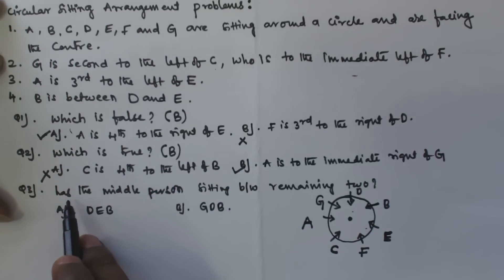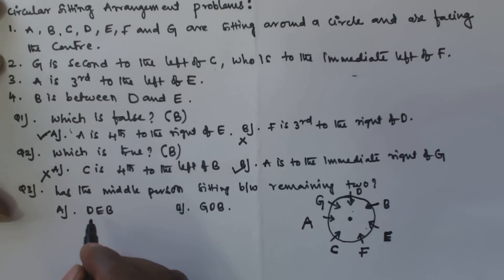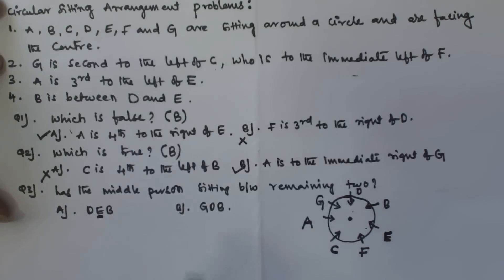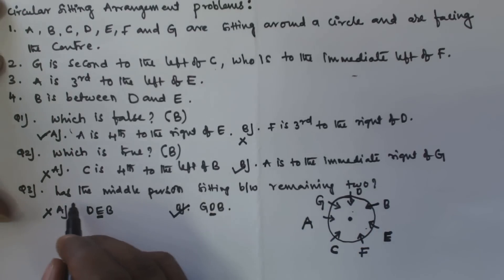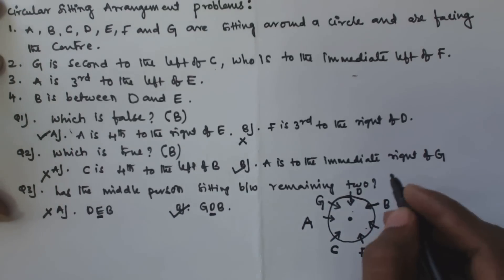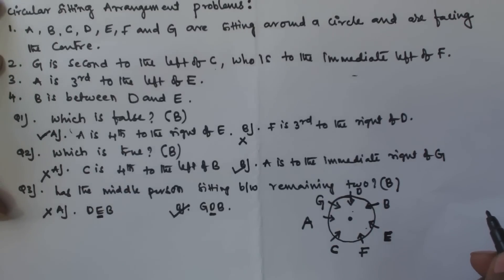For question three, we check which group has the middle person sitting between the remaining two. Option A: DEB — checking the arrangement, E is not between D and B, so this is false. Option B: GDB — D is sitting between G and B, so this is true. The answer for question three is option B. Thank you for watching — please subscribe to my channel, and if you have any doubts, leave a comment.